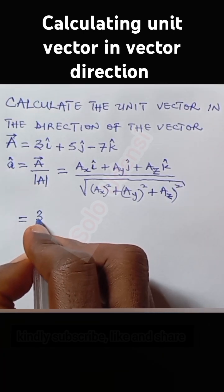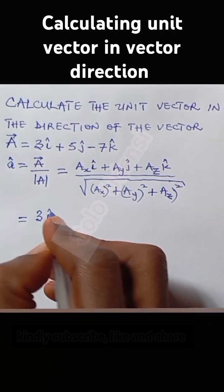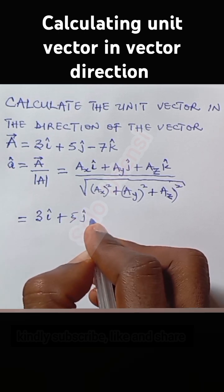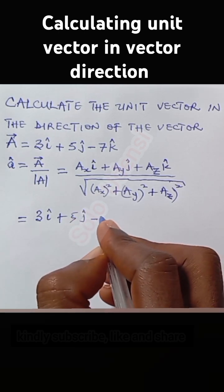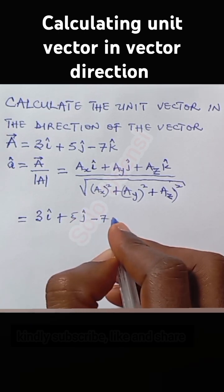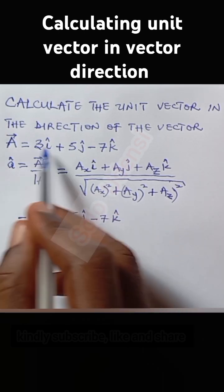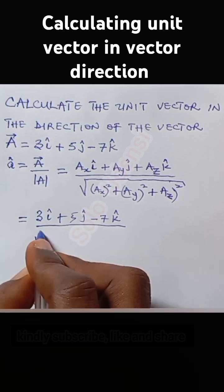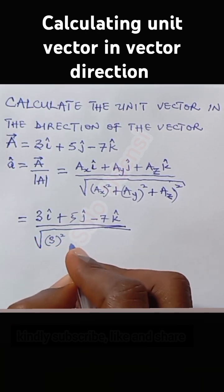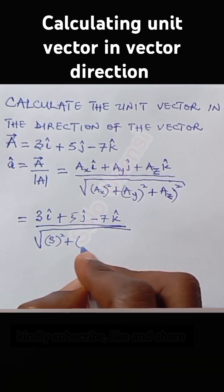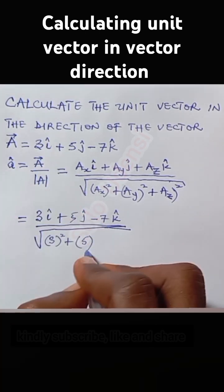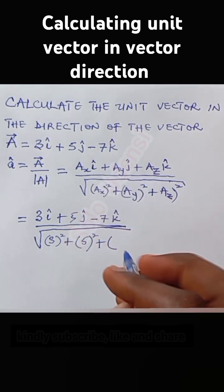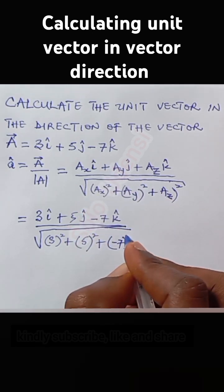So it equals 3î + 5ĵ − 7k̂ over the square root of 3² + 5² + (−7)².